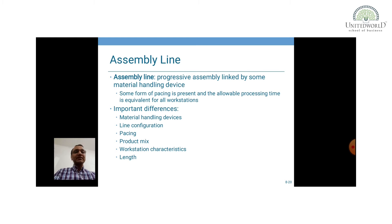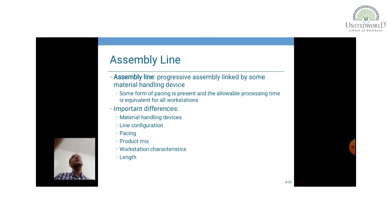Assembly line balancing: what is it? An assembly line means progressively assembled items linked by some material handling device. Some form of pacing is present, and the allowable processing time is equivalent for all workstations. Some form of pacing means how much time a product is going to be at one workstation and then how much time it is going to be at the next workstation.